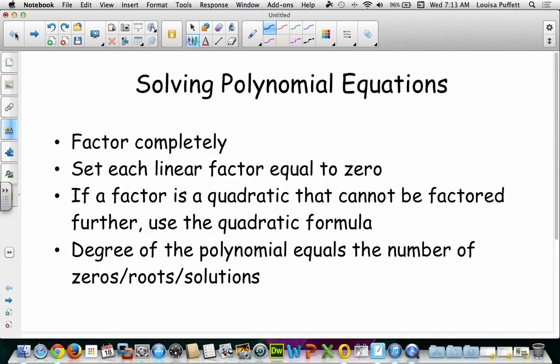A final thing to keep in mind: the degree of the polynomial equals the number of zeros, roots, or solutions to your polynomial. So if you have a polynomial of degree four, you'll have four solutions. They may be real, they may be imaginary, or some may be real and some may be imaginary, but you would still have four solutions. So let's get started with an example.